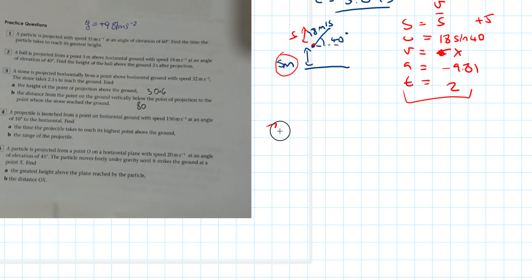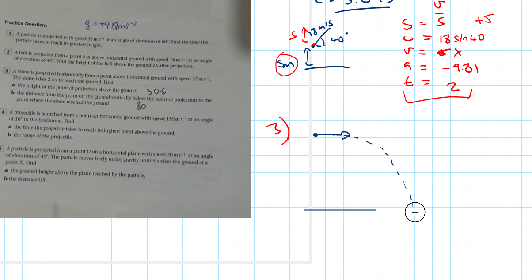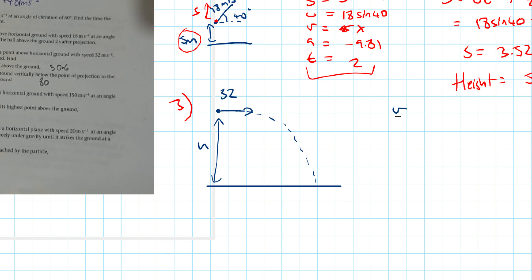Question 3: a stone is projected horizontally from a point above horizontal ground with speed 32 metres per second. The stone takes 2.5 seconds to reach the ground. Find the height of the point of projection above the ground, and the horizontal distance from the point on the ground directly below the projection point to where the stone lands. Drawing: the stone fires horizontally at 32 m/s and hits the ground at h after 2.5 seconds.